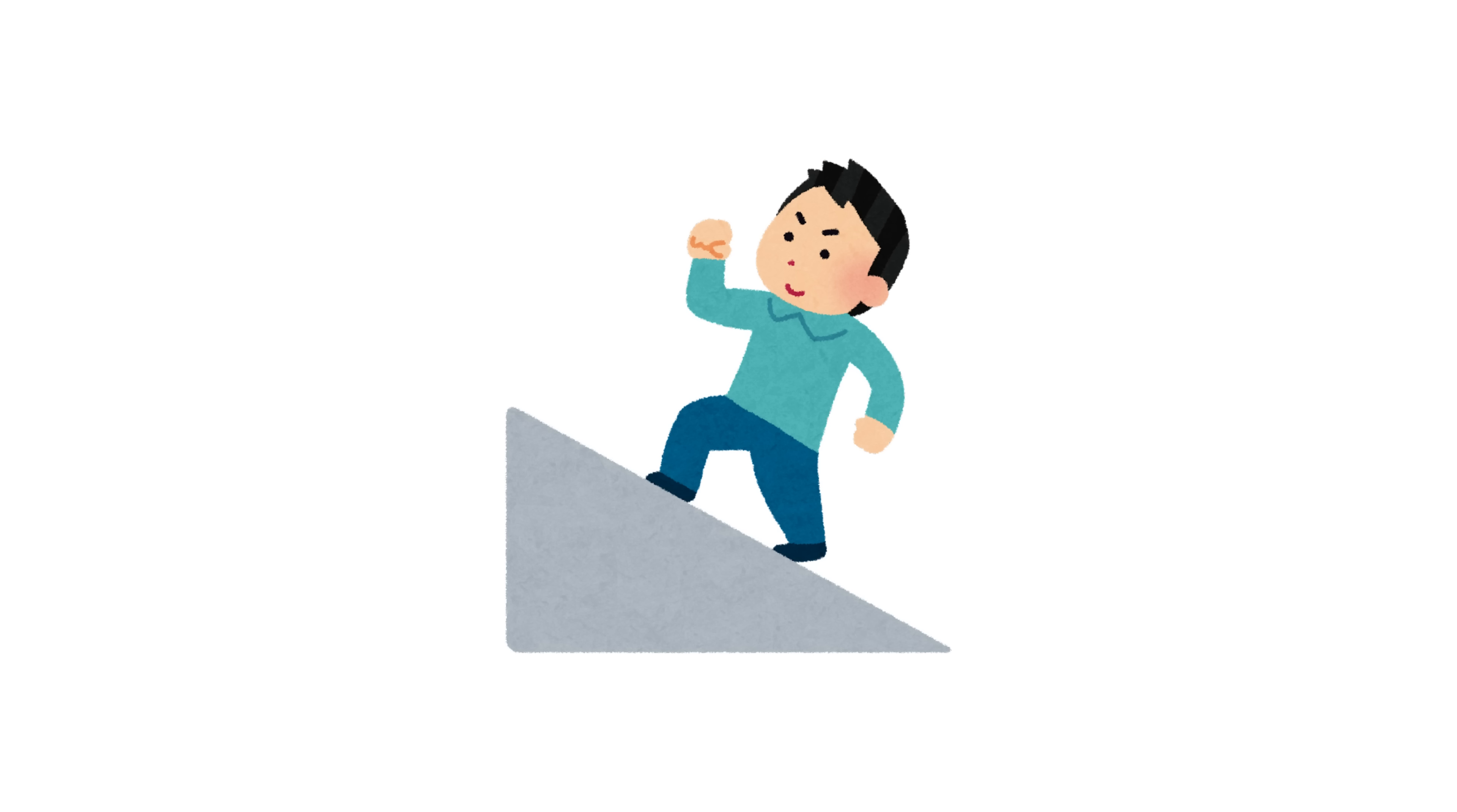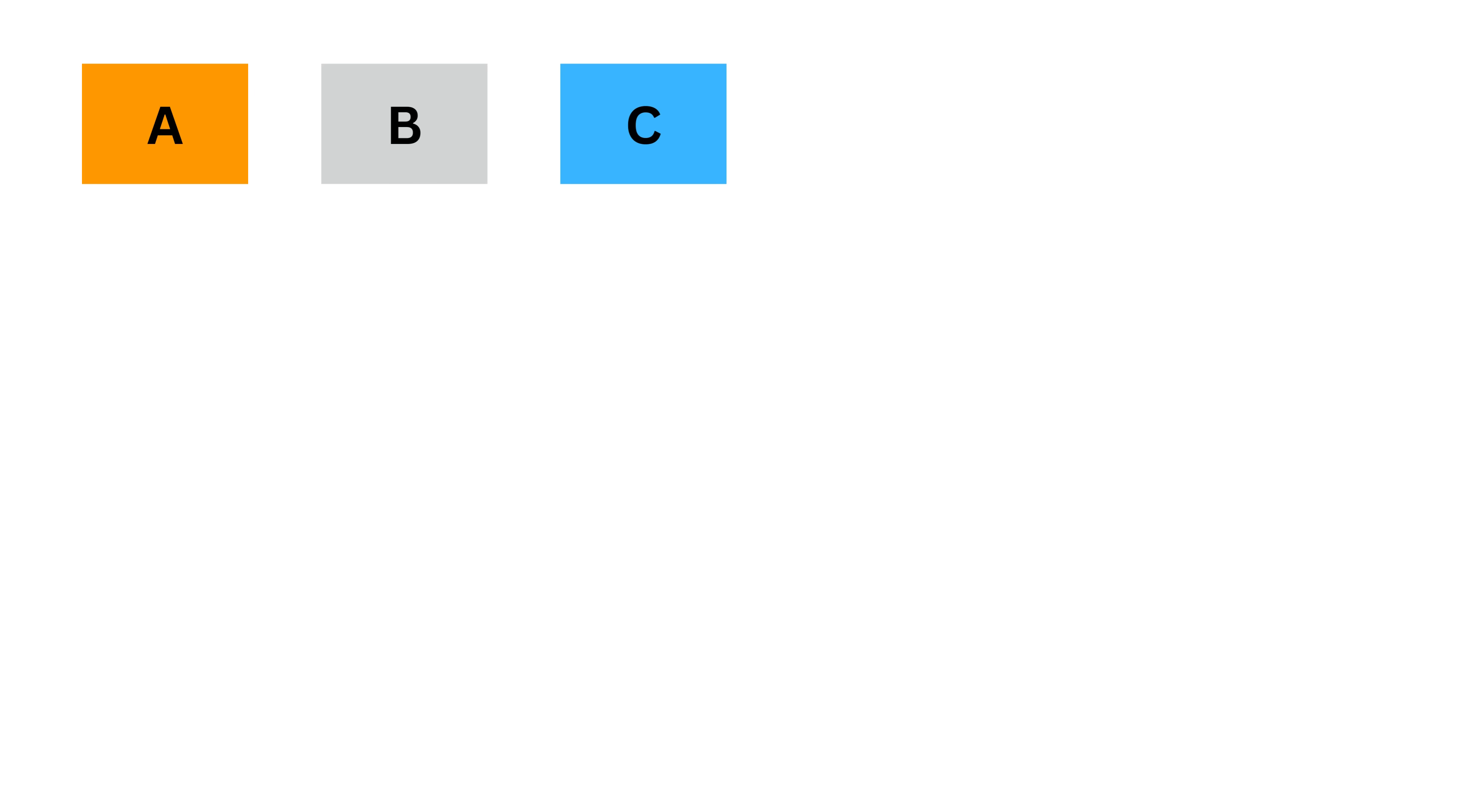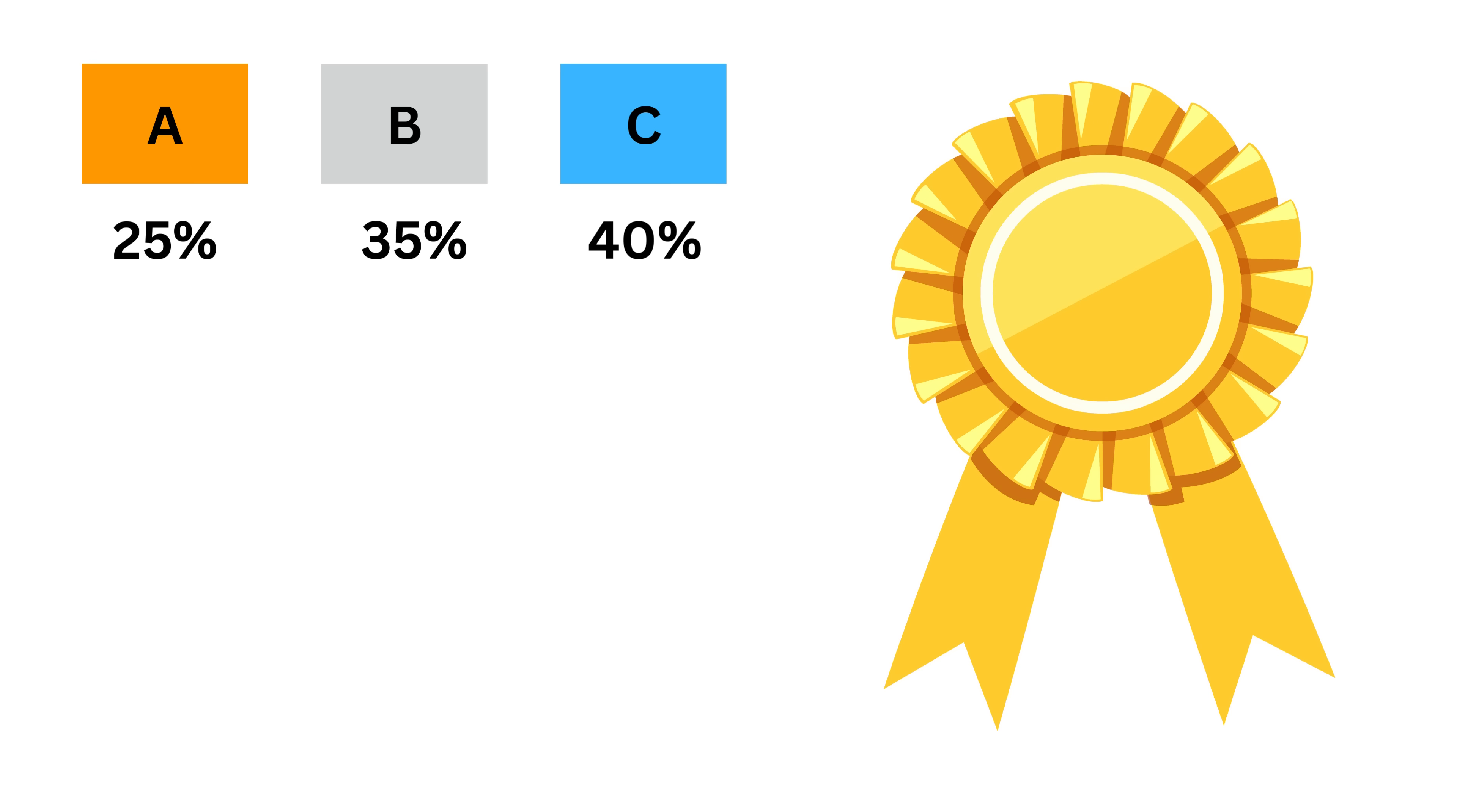Okay, let us level up our gear. We will introduce three events. Suppose we have three machines, A, B, and C. Machine A produces 25% of all items, B produces 35%, and C produces 40%. But the quality of the machines differs.